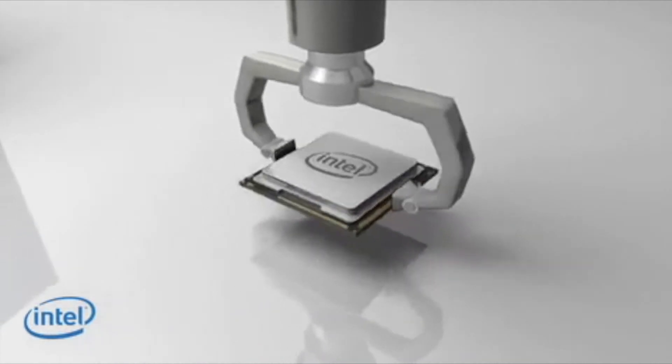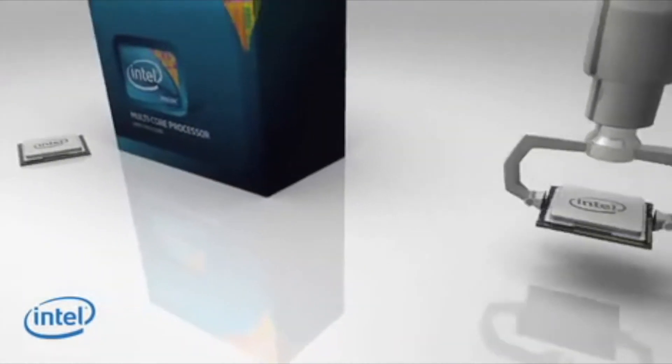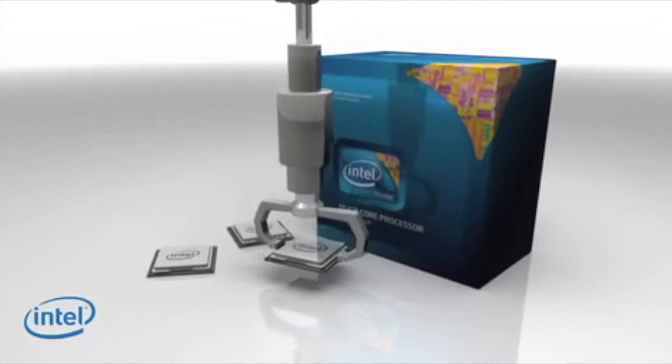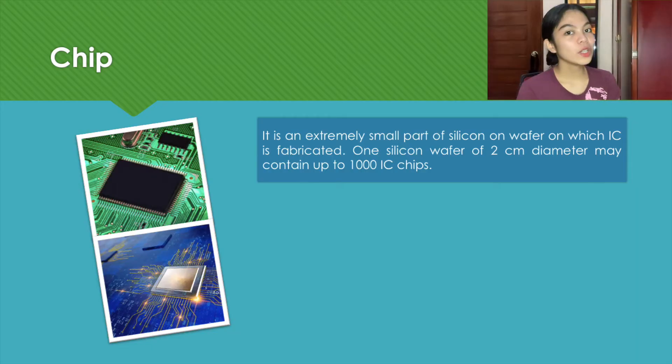We can find this on our computer, on our phone, and everything that is electronic. One silicon wafer of 2 cm diameter may contain up to 1,000 IC chips, and an example of IC chip is shown in the picture.